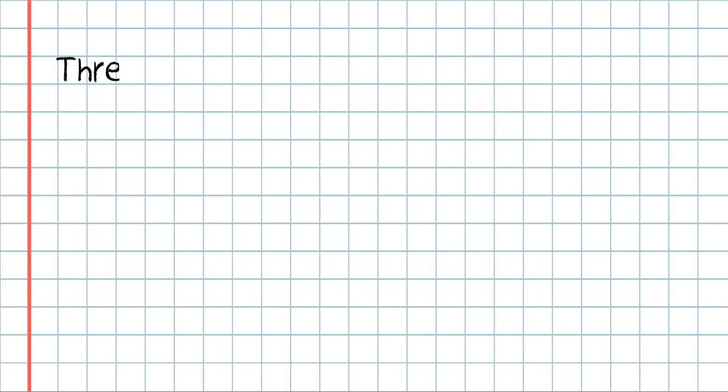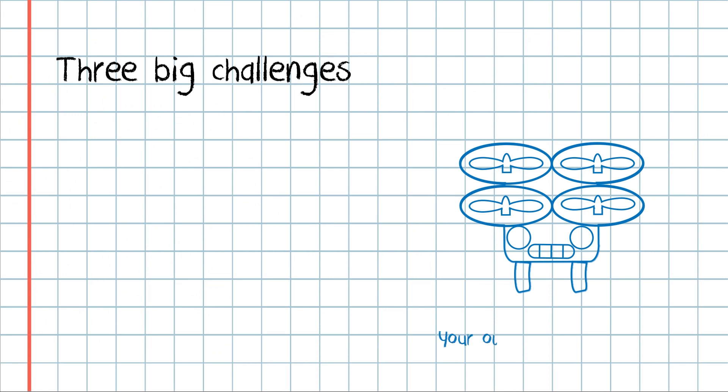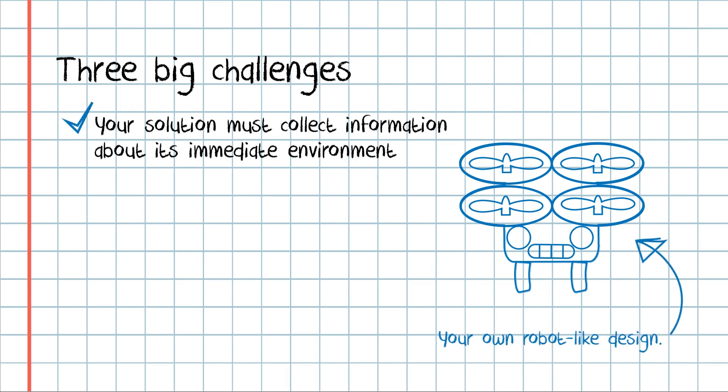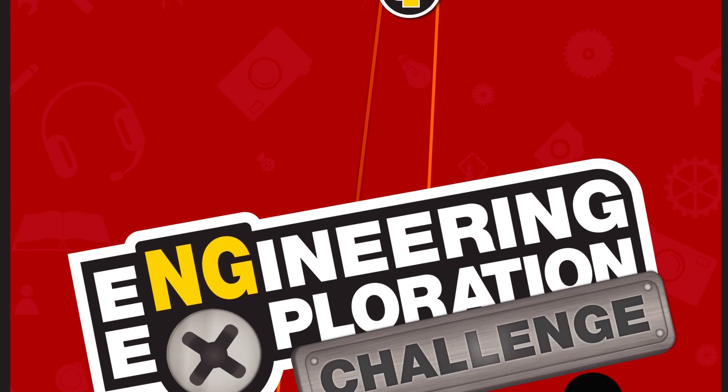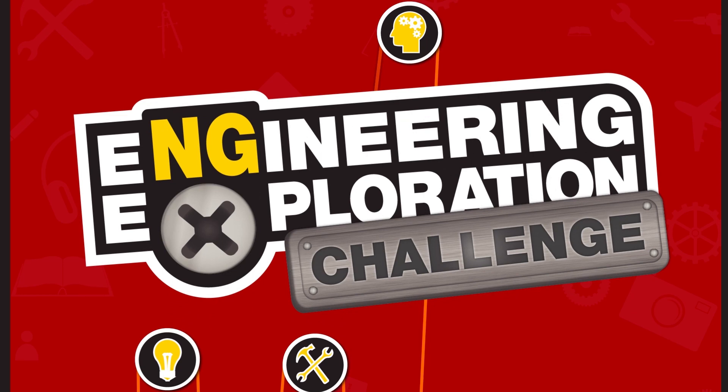Now it's your turn to solve up to three big challenges that explorers often face when they're in the field by using your own robot-like design. Your solution must collect information about its immediate environment and use that information to decide an action to take, the way a robot might. The resulting action can be as big or as small as you can imagine. We want you to tell us your best ideas for our engineering exploration challenge.